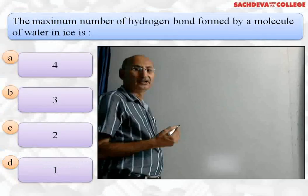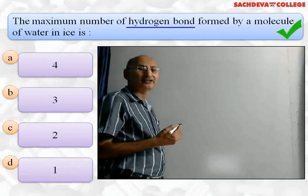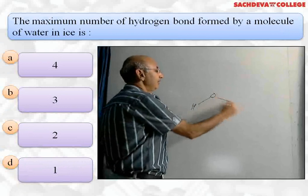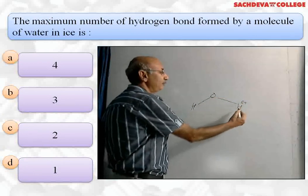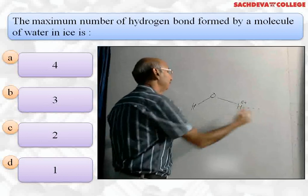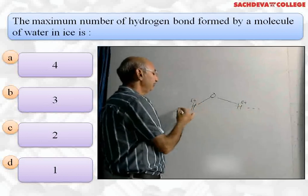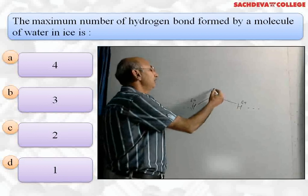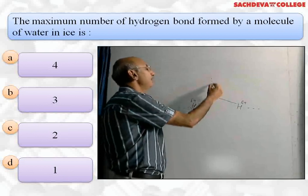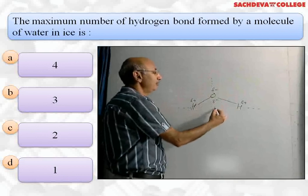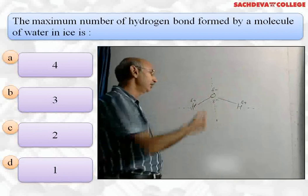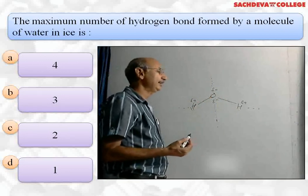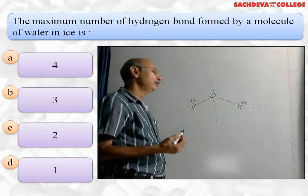Next question: the maximum number of hydrogen bonds formed by a water molecule in ice is four. One hydrogen bond is formed by each hydrogen atom (which carries a δ⁺ charge), giving two bonds. The oxygen atom, which has two δ⁻ charges, forms two additional hydrogen bonds — one upward and one downward. Thus each water molecule forms four hydrogen bonds, and each water molecule is tetrahedrally bonded to four other molecules, leading to the hexagonal structure of ice.